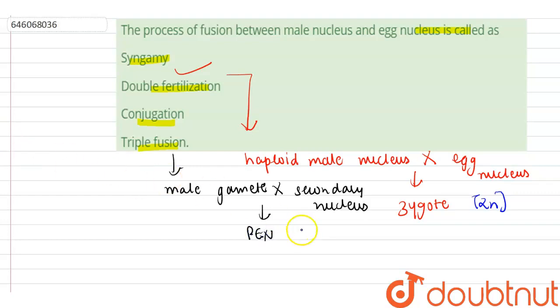It later develops into the endosperm, which will also be a triploid structure, and that is why this process is known as triple fusion.